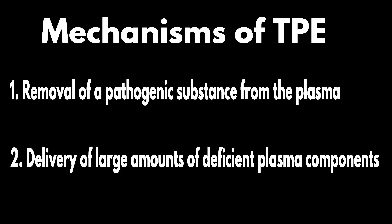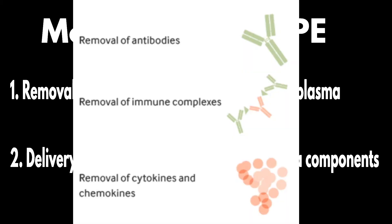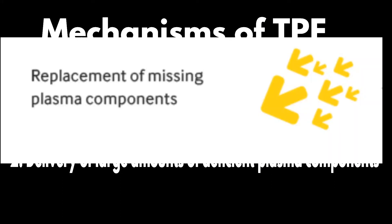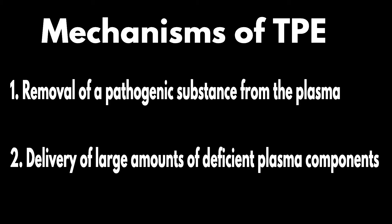There are two mechanisms of action of therapeutic plasma exchange. First is removal of a pathogenic substance from the plasma, like IgG in myasthenia gravis or IgM in Waldenstrom macroglobulinemia. And second is delivery of large amounts of deficient plasma components, like ADAMTS-13 in thrombotic thrombocytopenic purpura.